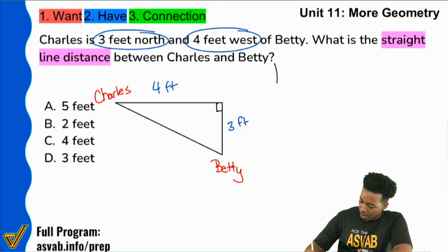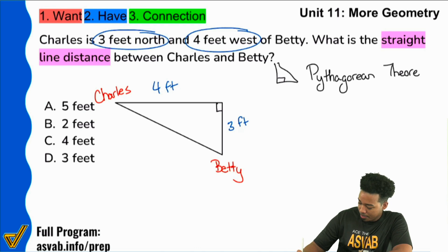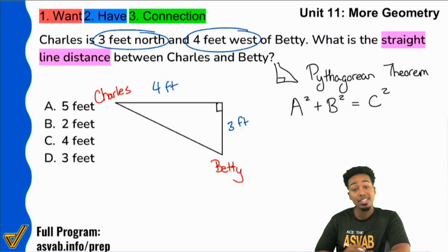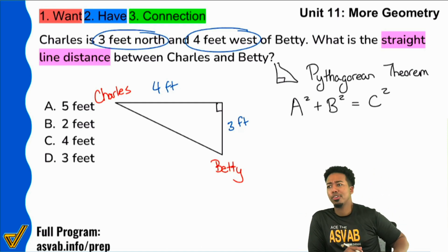Because remember, with right triangles, you have the Pythagorean theorem. Let me write this down for you. Pythagorean theorem. And that's going to be A squared plus B squared equals C squared. Now we might need a little refresher, right? What's A, what's B, what's C?